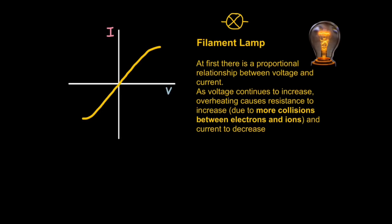So to describe it, at first there is a proportional relationship between voltage and current. That's about up to here. You can see it's a straight line up to here. Then as voltage continues to increase over here, overheating causes resistance to increase. Remember that overheating is due to more collisions between the electrons and the ions in a wire. As a result, the current decreases. And that's how you explain this.